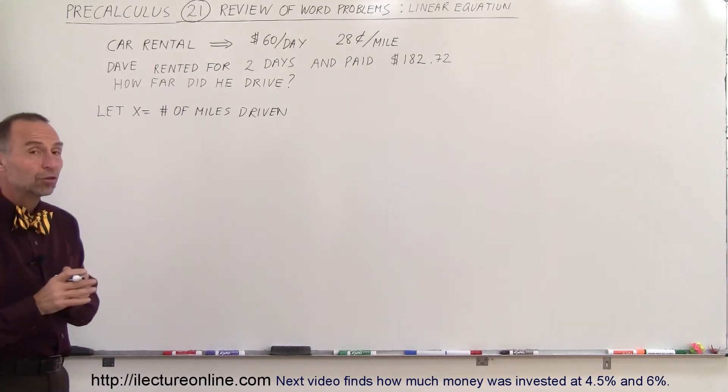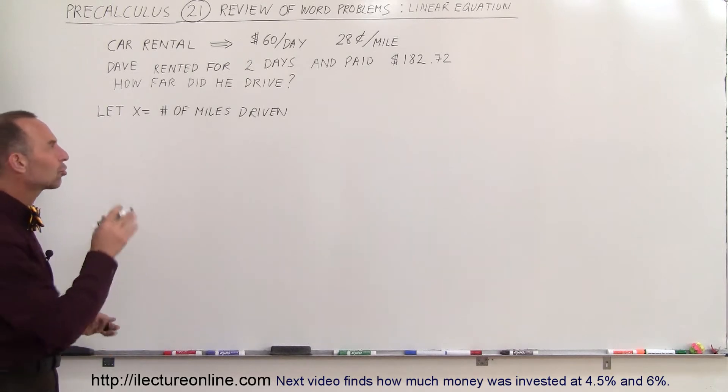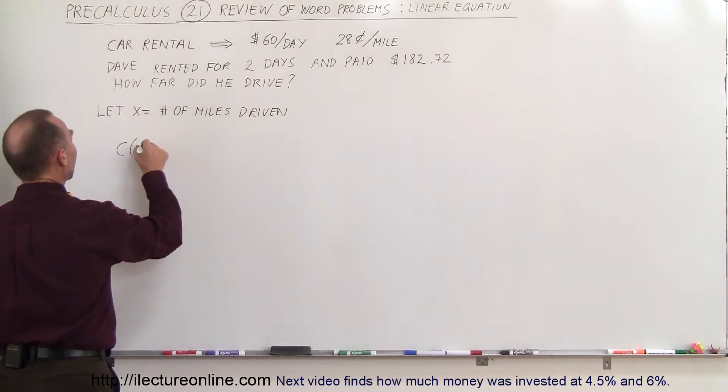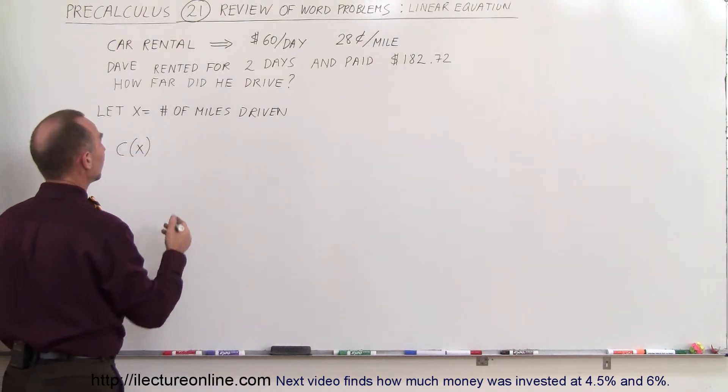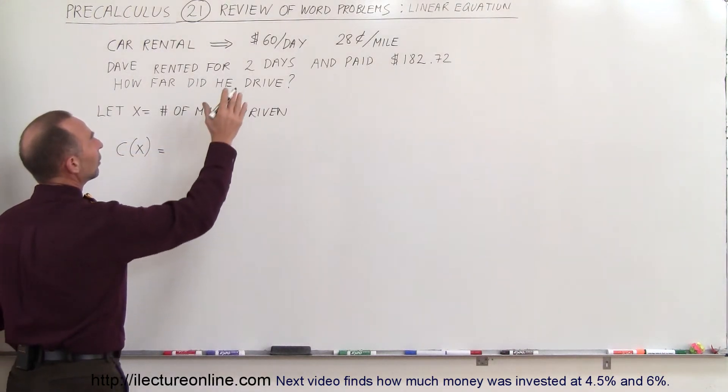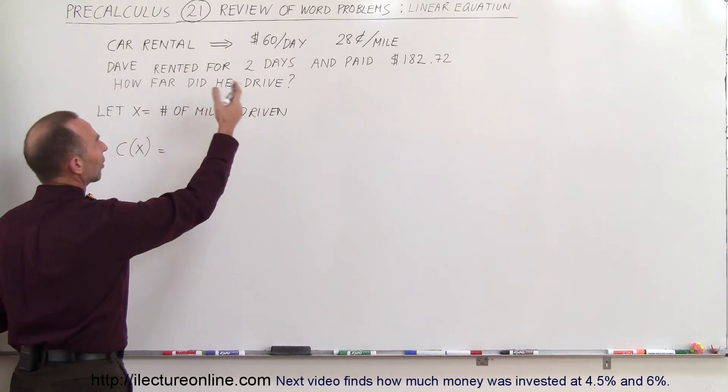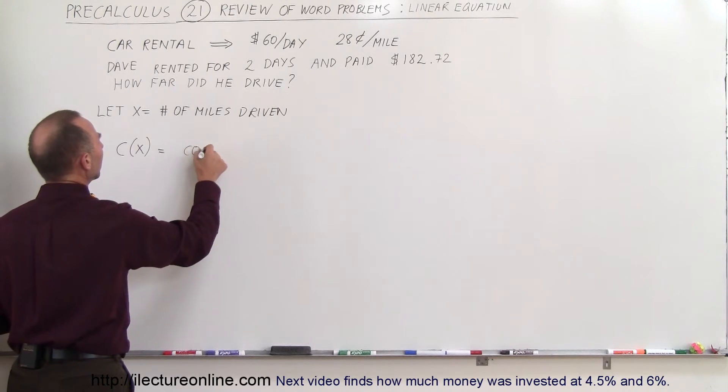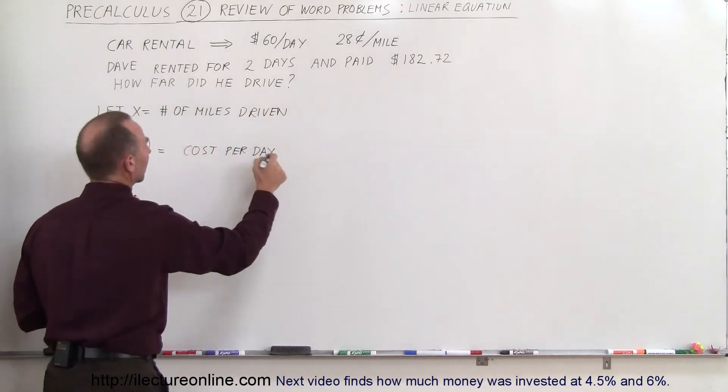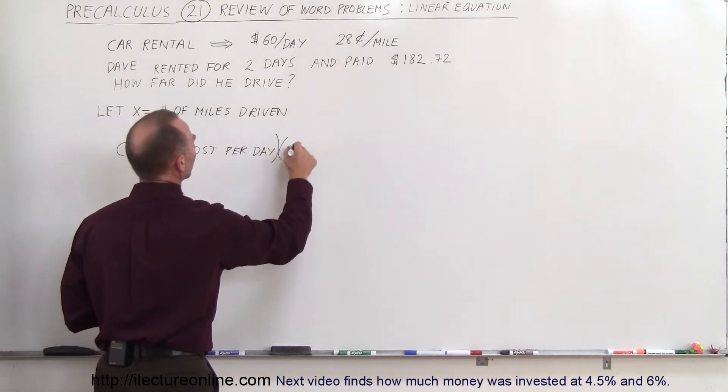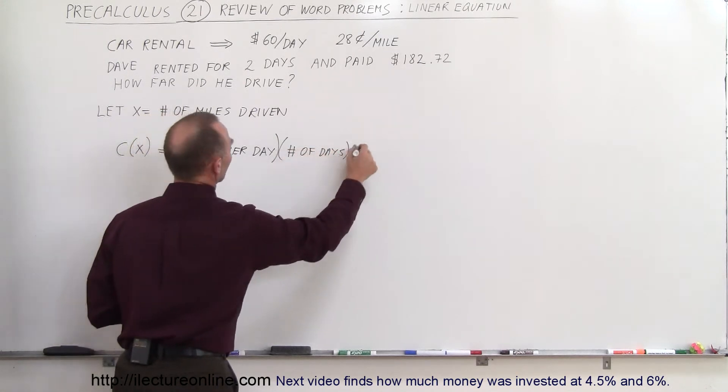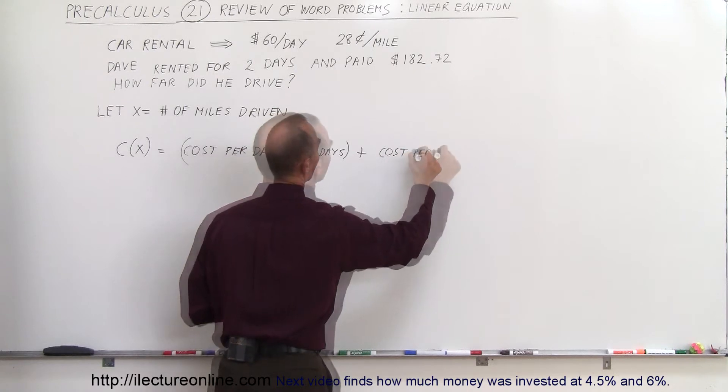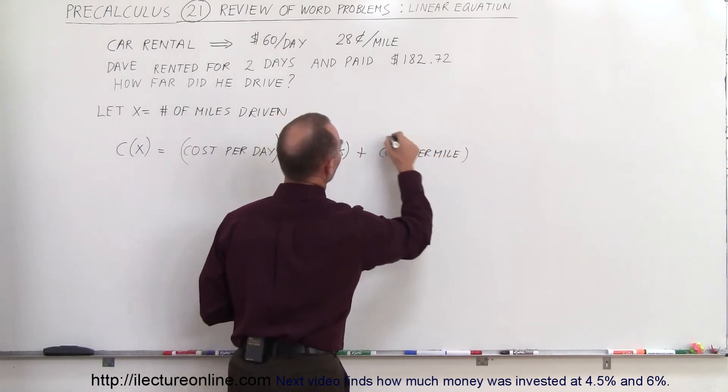The next thing you want to do is come up with a linear equation that describes the cost of renting that car. And so the cost as a function of X and the number of days is equal to the cost per day times the number of days plus the cost per mile times the number of miles.